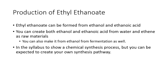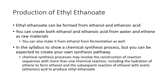In the syllabus, you are expected to show a chemical synthesis process or at least understand one, and you can be expected to create your own synthesis pathway. The syllabus states: the chemical synthesis process may involve the construction of a reaction sequence with more than one chemical reaction — that multi-step stuff — including the hydration of ethene to form ethanol and the subsequent reaction of ethanol with acetic acid to produce ethyl ethanoate. That's the only reason we're learning about this.